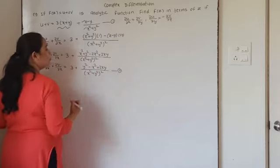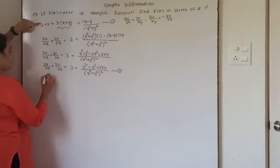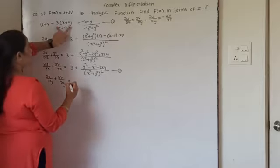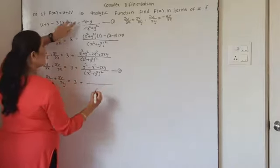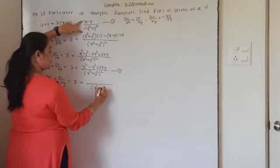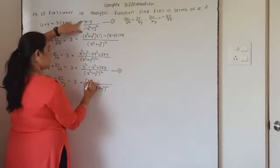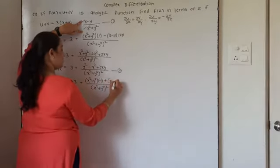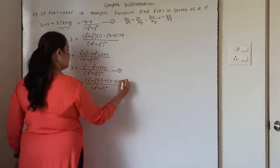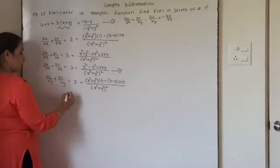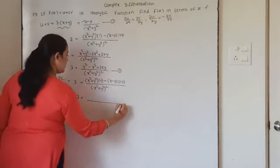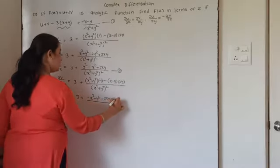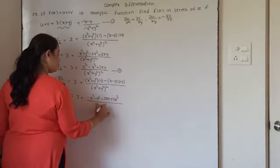Now if I differentiate equation 1 with respect to y, you will get ∂u/∂y plus ∂v/∂y equal to 3 plus, again applying the quotient rule with (x squared plus y squared) squared in the denominator. In the numerator it is (x squared plus y squared) into minus 1 plus (x minus y) into derivative of the denominator which is 2y. So we have 3 plus, in the numerator it is minus x squared minus y squared minus 2xy plus 2y squared, upon (x squared plus y squared) squared.